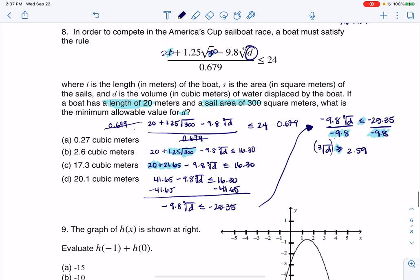All right, and then the last thing I need to do is just cube both sides. And when you cube a cube root, that cancels. So D has got to be greater than or equal to, and when I do 2.59 cubed on my calculator, I'm going to get 17.31, and this was D. If we look at the units for D, it was cubic meters.